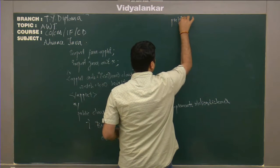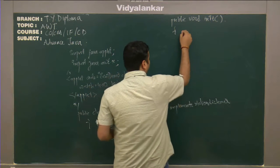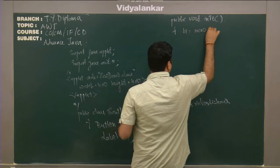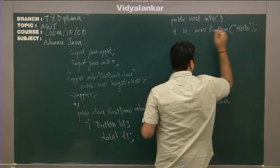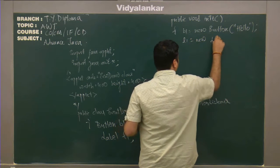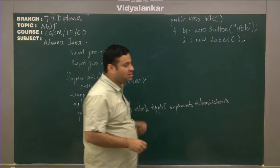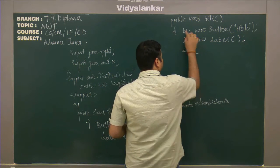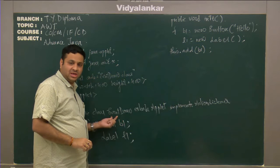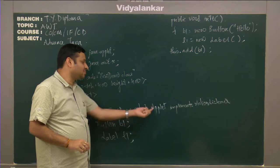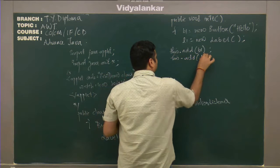We all know INIT method is invoked as soon as the applet is loaded. As soon as my applet is loaded, we will create object of button, and let the label of the button be hello. We will create a label. We have to add this component on the container applet. We have add B1. This refers to the object of event demo class, which itself is subclass of applet. We have added B1 button on the applet. We have added label L1.